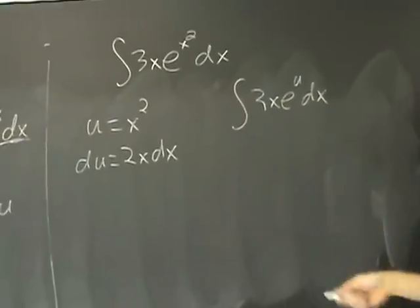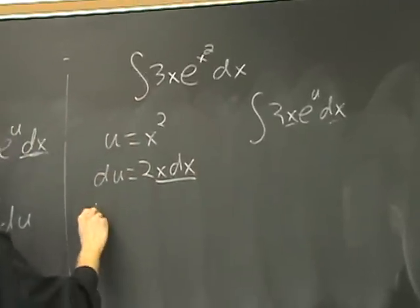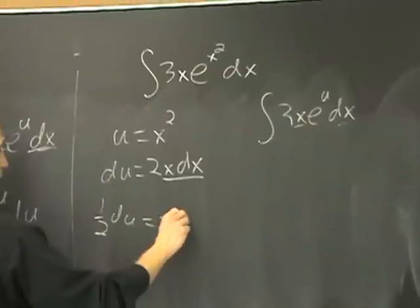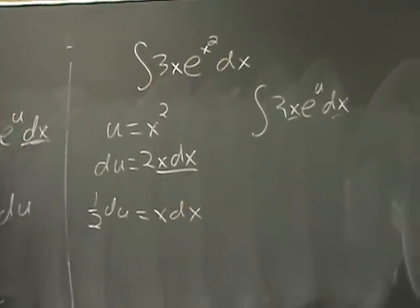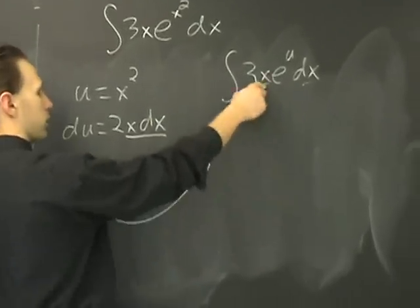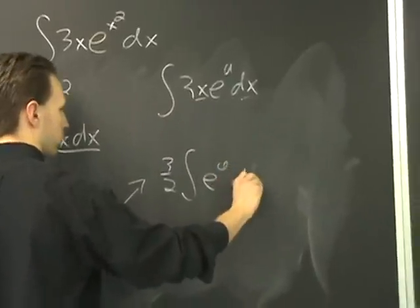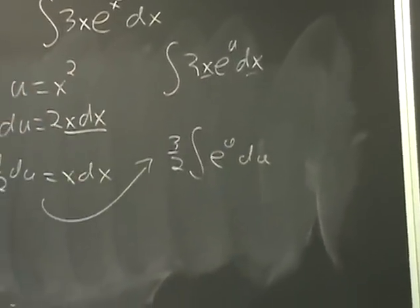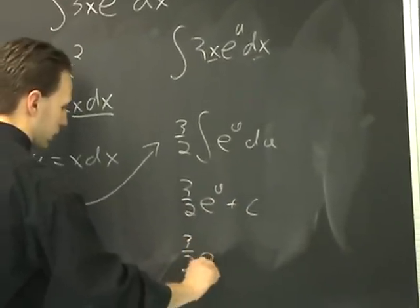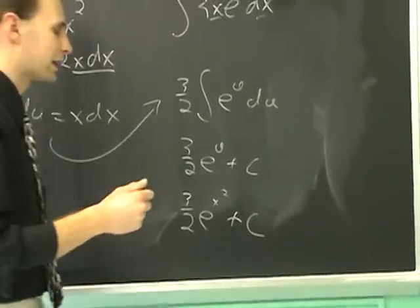What's got to be eliminated? x dx. Can we do that? Yes. x dx can be traded in for one half du — you pull the 2 down, and get one half du equals x dx. So then keep the 3, replace x dx with one half du, and that gives you, pulling out the 3, three halves times the integral of e to the u du, which evaluates easily to three halves e to the u plus c, or three halves e to the x squared plus c.